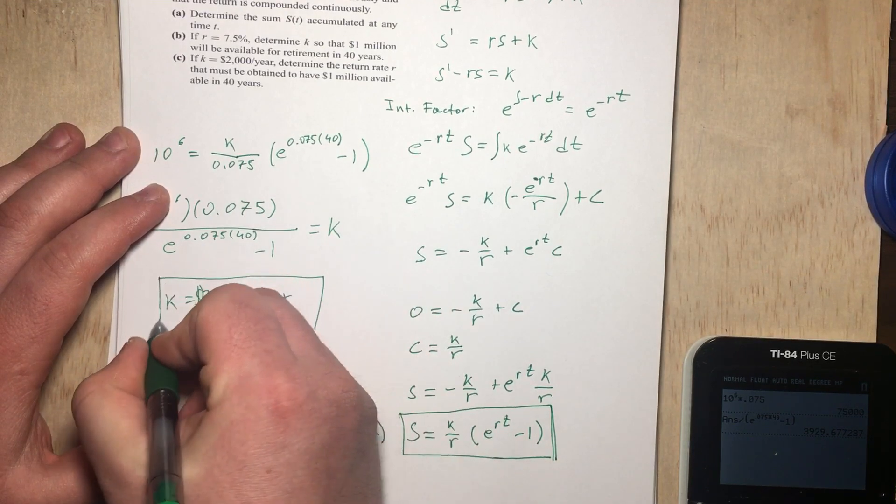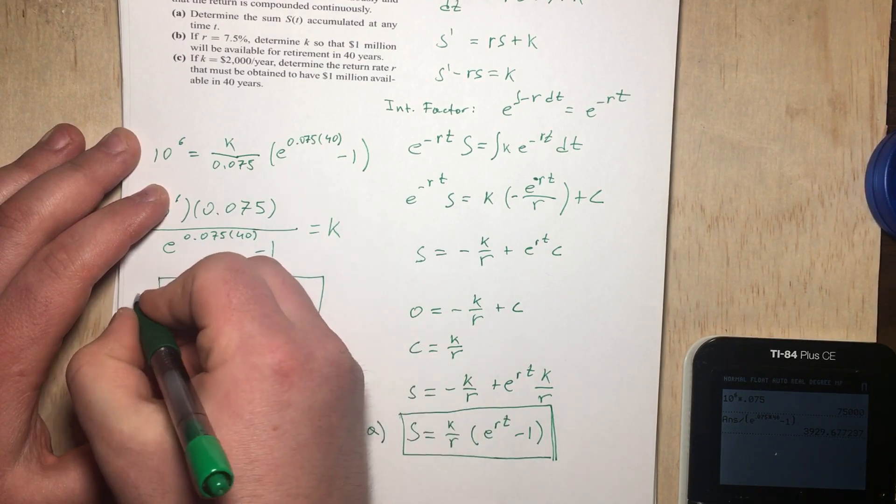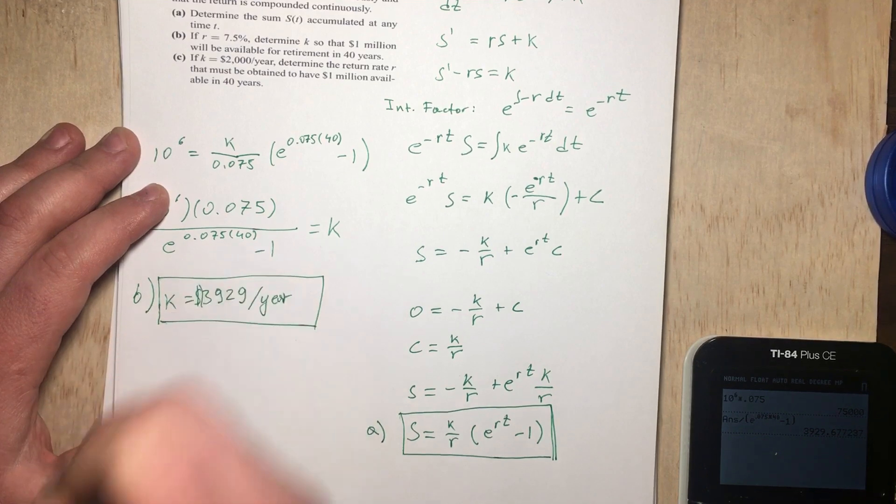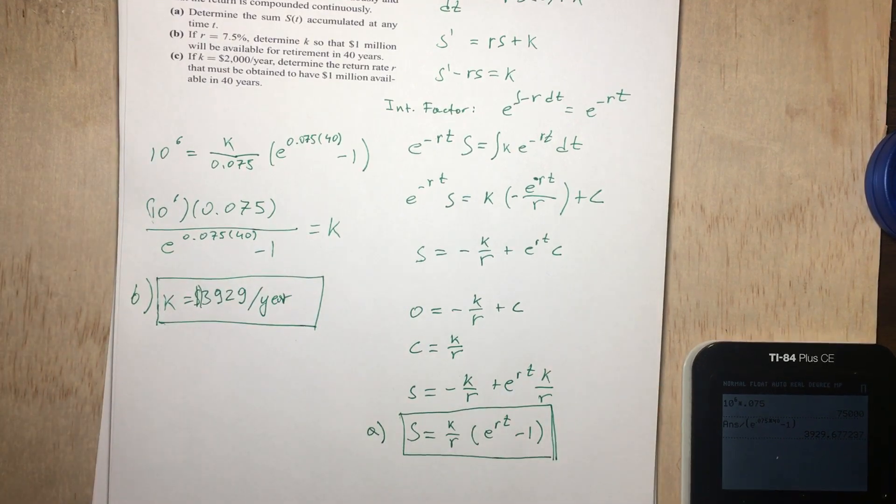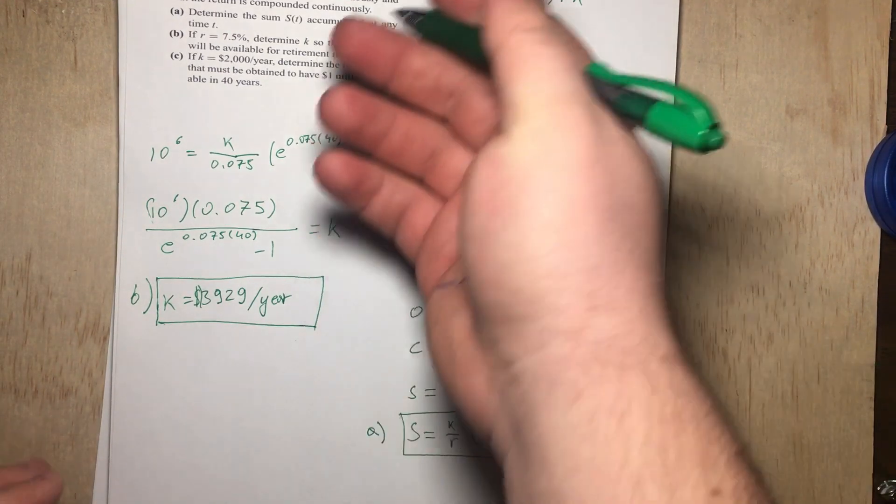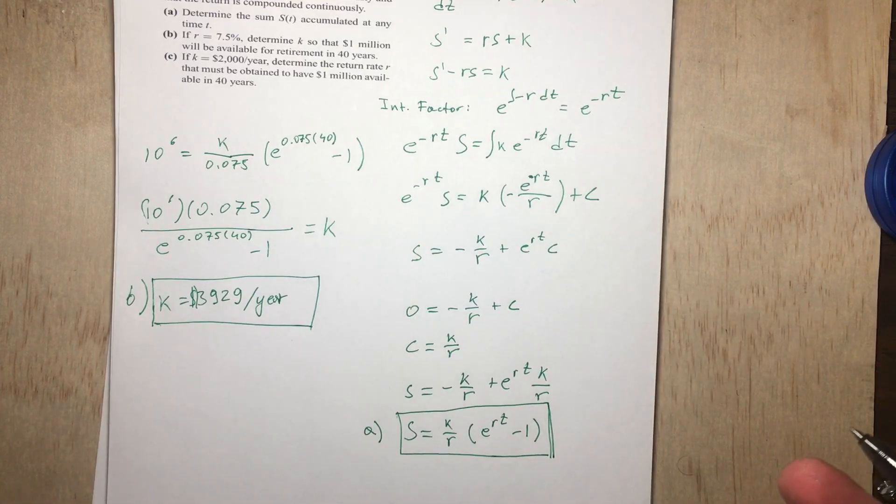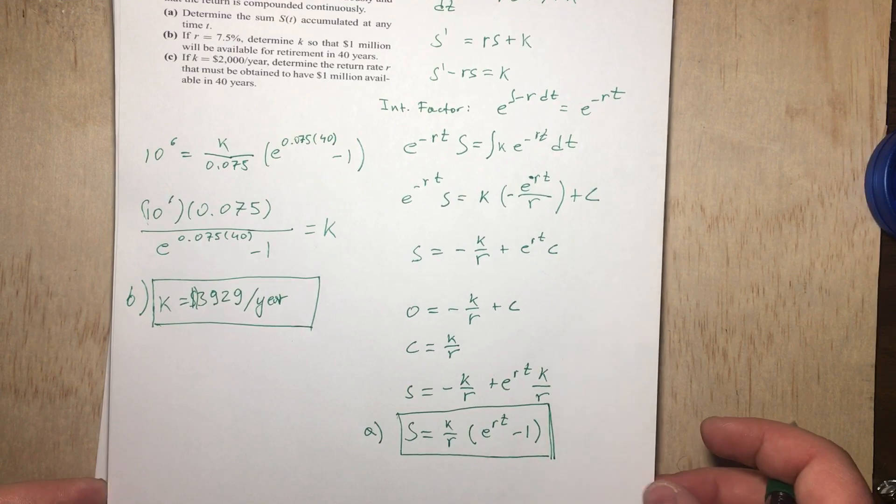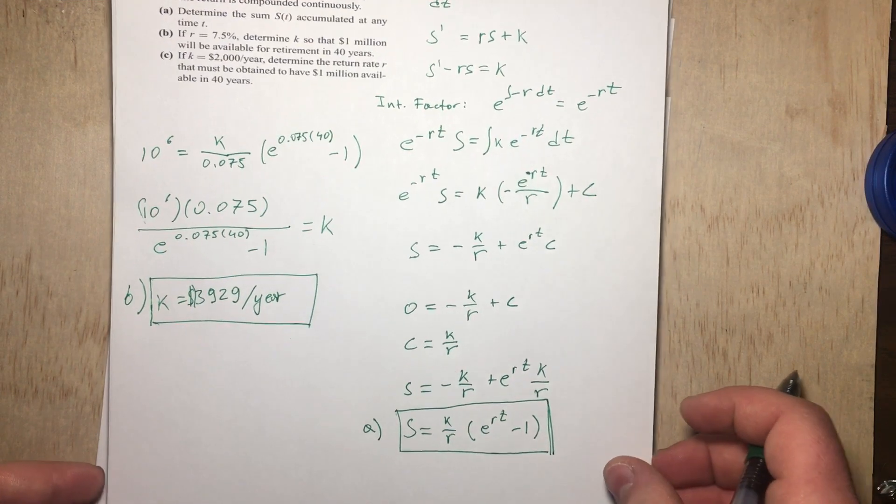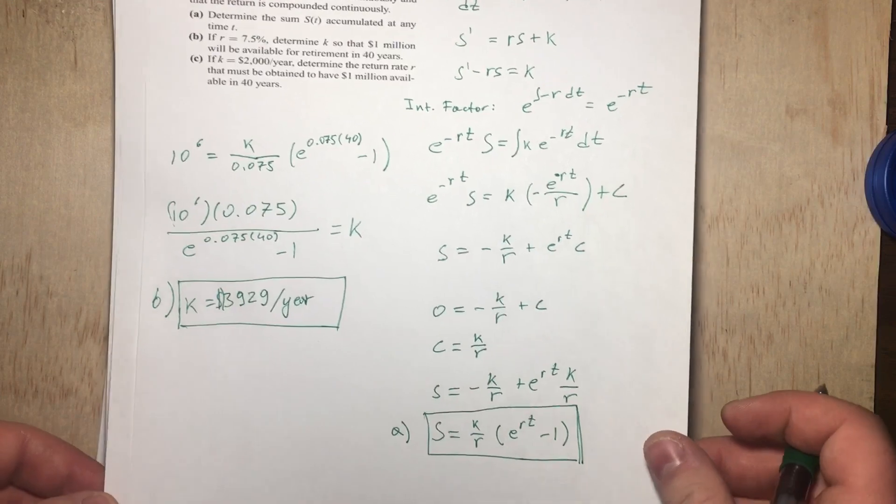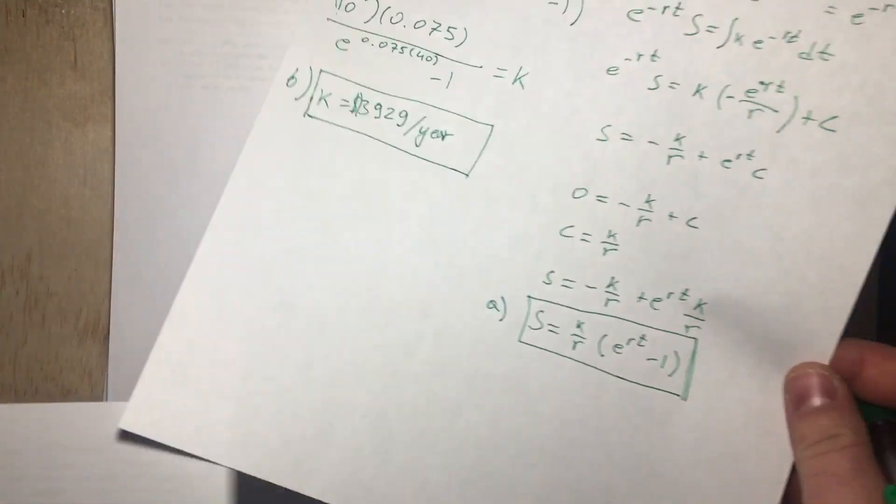So this is the answer to part B, and this is pretty good news. If you can get an annual return rate of 7.5% and you invest about $4,000 a year, which if you have a good paying job is not a lot yearly, you can retire with $1 million in 40 years. That's pretty good news for us, right? So let's go ahead and look at part C.